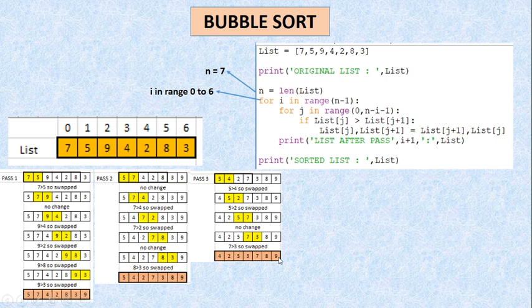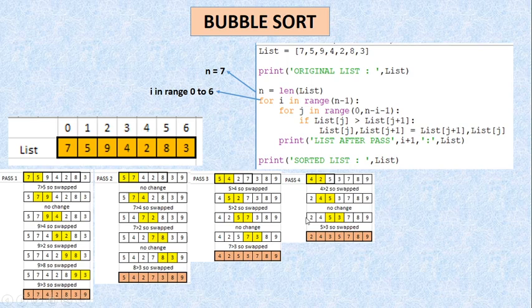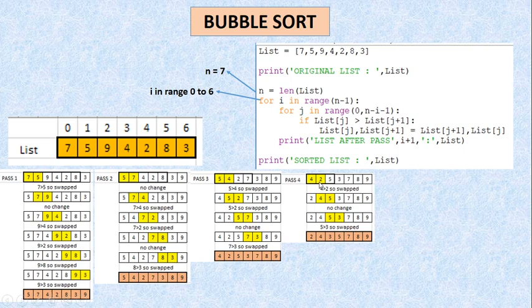Pass 4 में i की value 3 है, तो 7-3-1=3, range 0 से 3 तक मतलब index 0, 1, और 2 के लिए loop चलेगा। 4 और 2 को compare किया — 4 पीछे। फिर 4 और 5 को compare — no change। फिर 5 और 3 को compare — 5 पीछे। And at the end of pass 4 I get this list। I hope आपको समझ में आ रहा होगा।